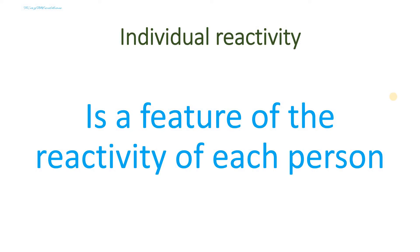Individual reactivity is the reactivity of each individual person. The impact of a factor on a group of people or animals never causes exactly the same changes in life activity in each individual. For example, with an influenza epidemic, some people get sick seriously, others get sick mildly, and still others don't get sick at all, although the pathogen enters their body. This is explained by the individual reactivity of each organism.